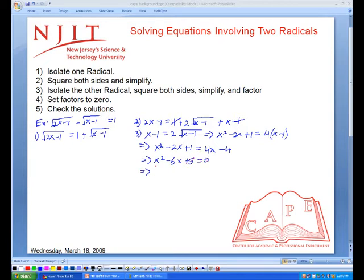Then factoring out, we get x minus 5 times x minus 1, which equals 0.